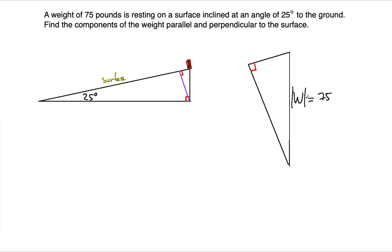Keep in mind that 75 is the magnitude of the vector — the length of the line segment from the starting point to the endpoint corresponds to 75 pounds. We're asked to find the components of this weight vector: W1, which is parallel to the surface, and W2, which is perpendicular to the surface. We need to find these two components knowing the magnitude of the weight is 75 pounds.